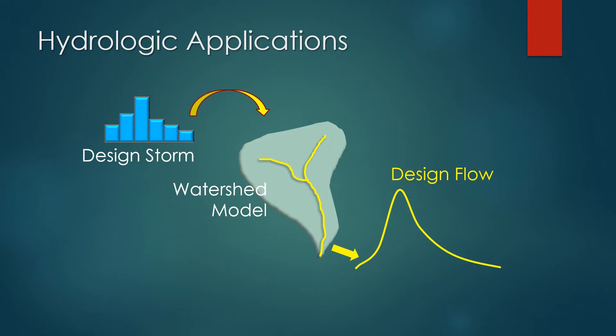In our hydrologic applications, the idea is to develop some sort of design flow at an appropriate risk level that our designed water infrastructure can manage successfully. We typically do that by using a design storm, inputting that information into some representation of a watershed, and out pops a peak discharge or a complete hydrograph.